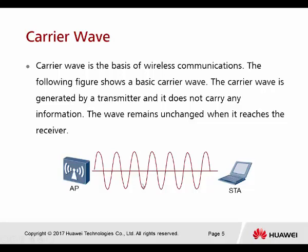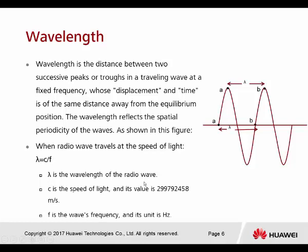We have the wavelength here. The wavelength is calculated from point A to point B — that is the lambda. The wavelength is the distance between two successive peaks of a traveling wave at a fixed frequency. Radio waves travel at the speed of light, using the formula lambda equals C divided by F.